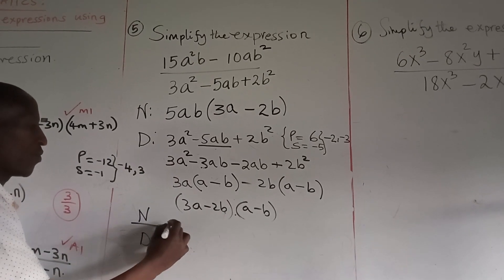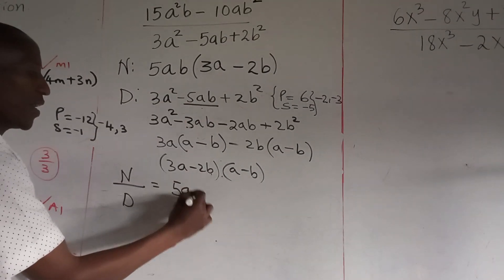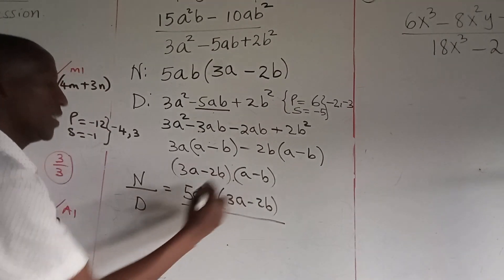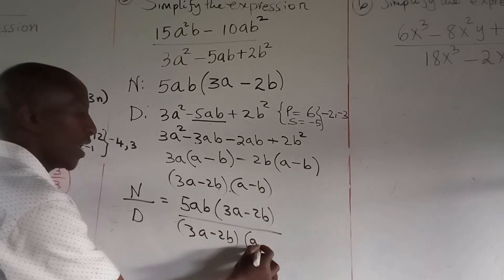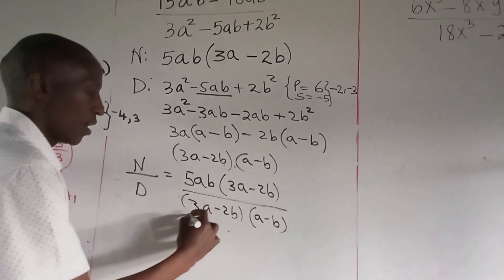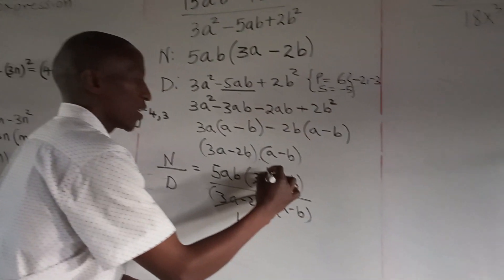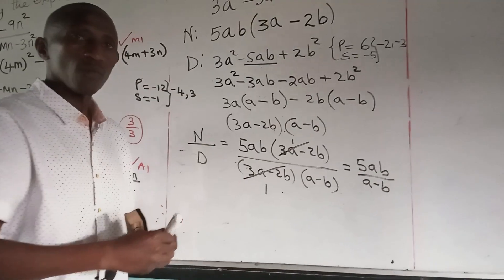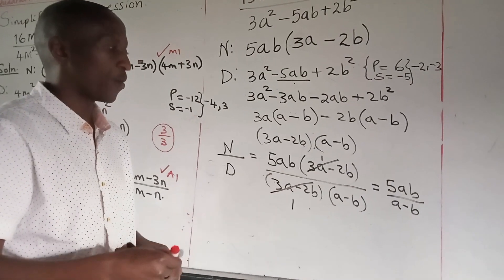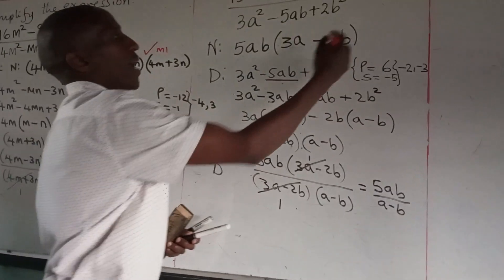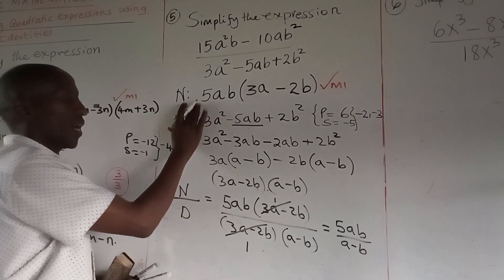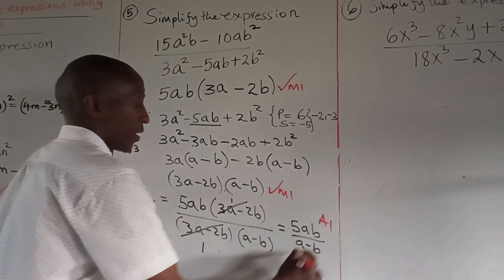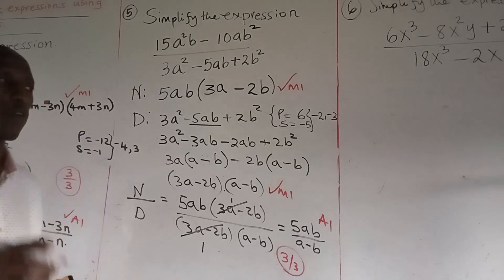Putting numerator over denominator: 5ab(3a − 2b) all over (3a − 2b)(a − b). The factor (3a − 2b) cancels, leaving 5ab over (a − b). Marking: numerator correct M1, denominator correct M1, final answer A1 — 3 out of 3.